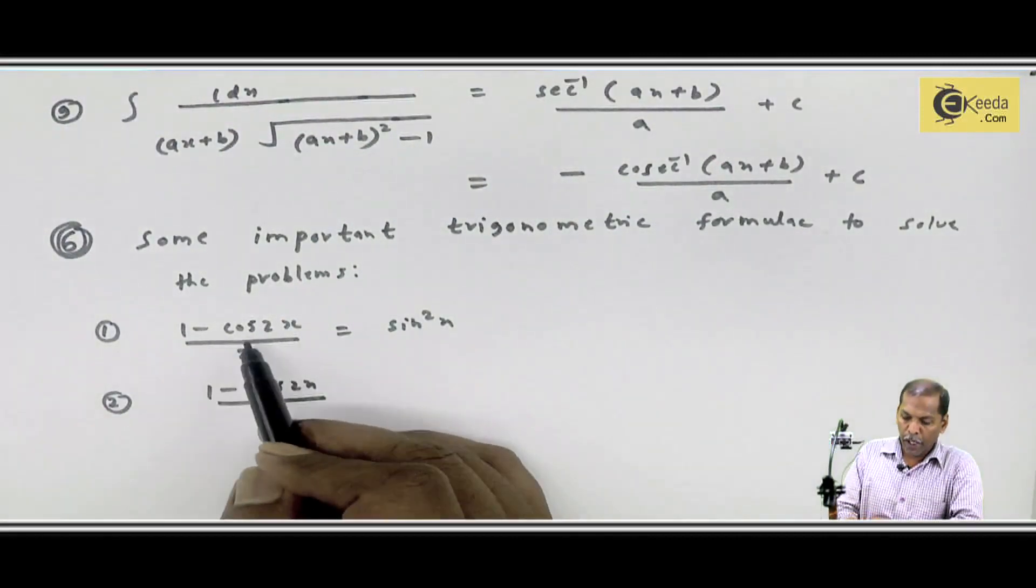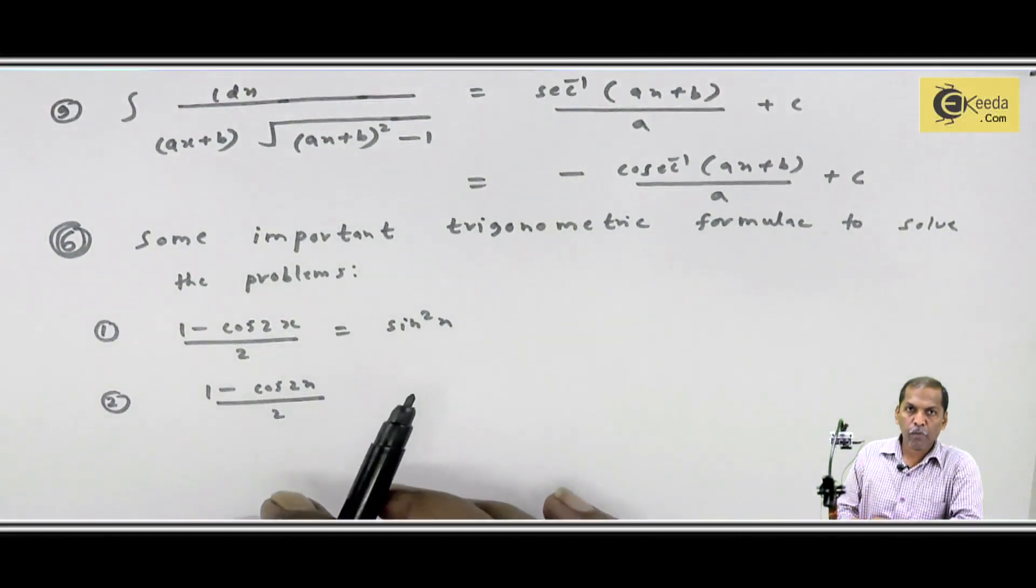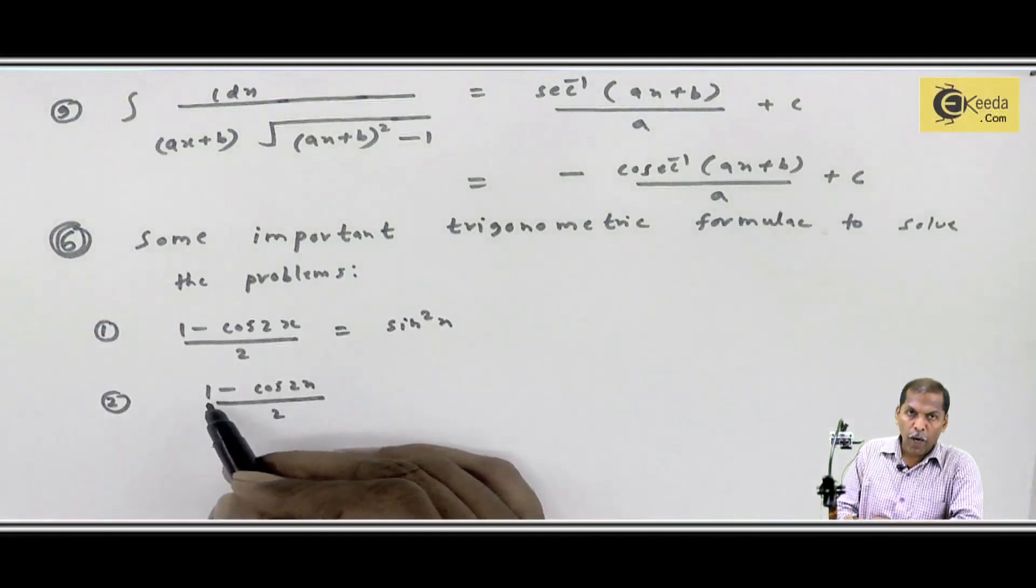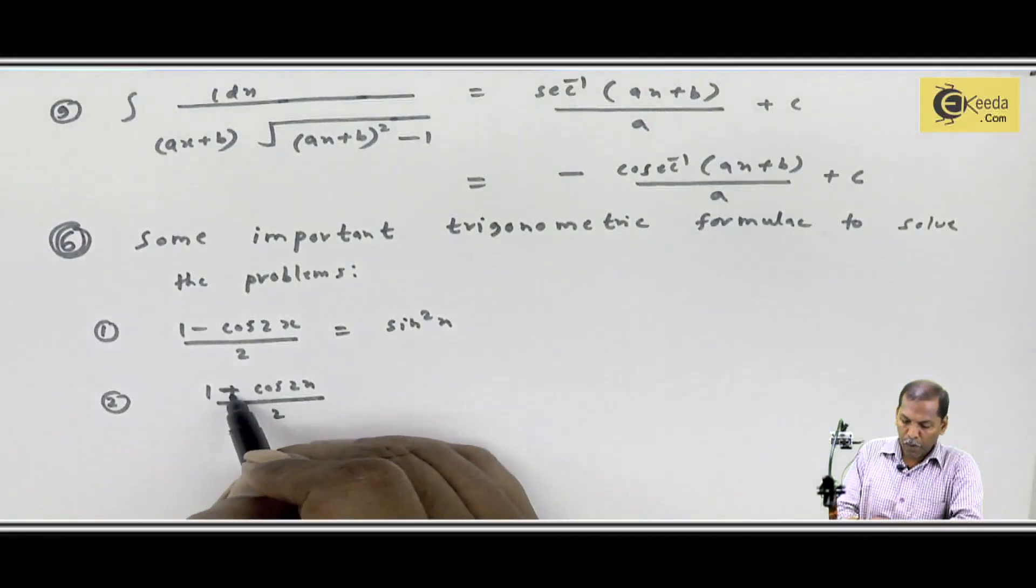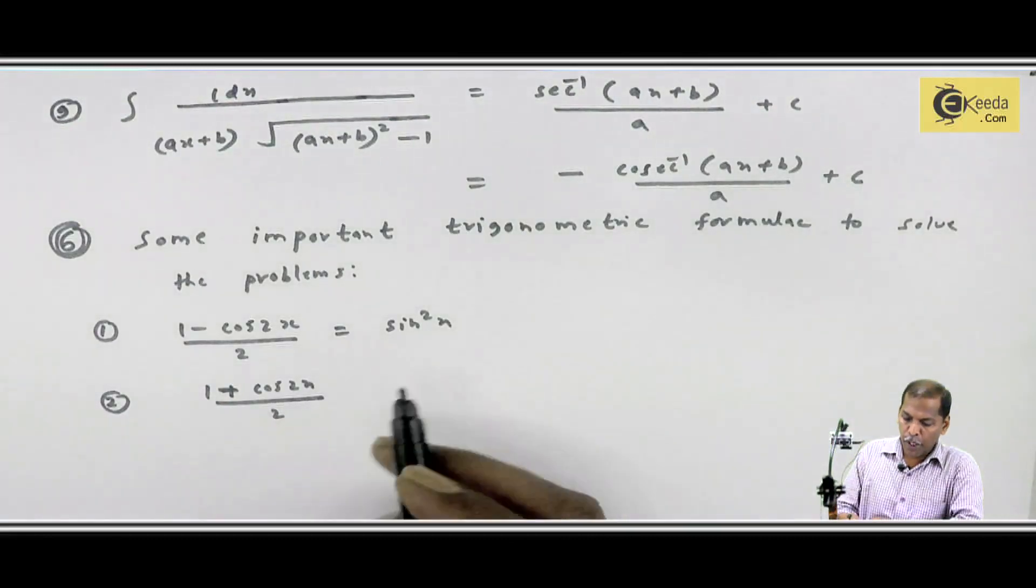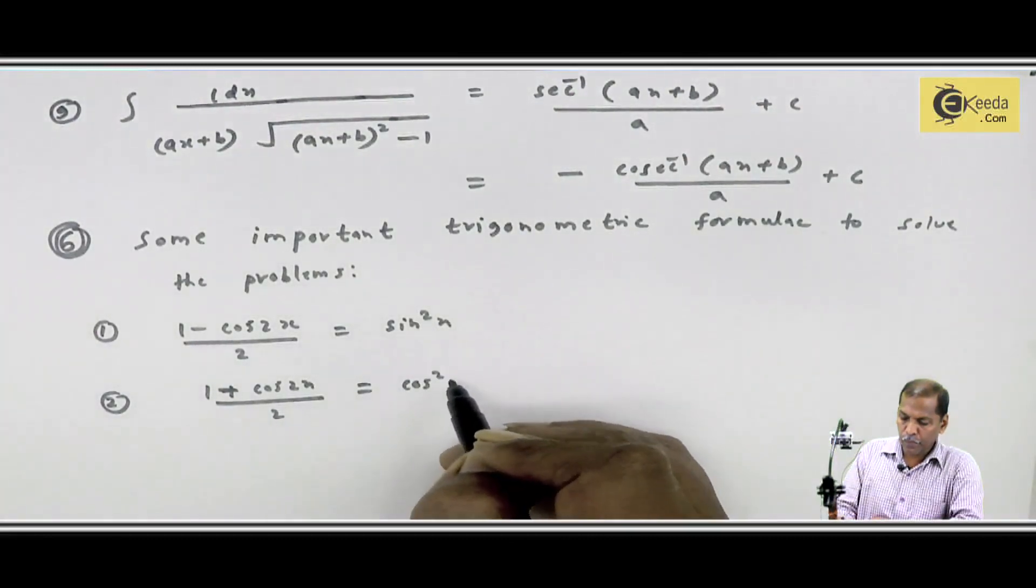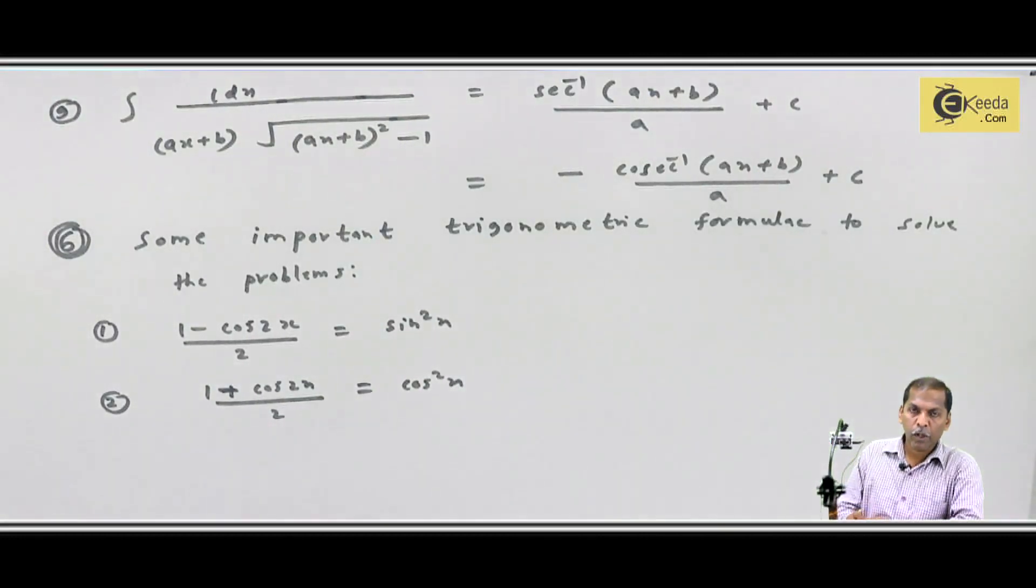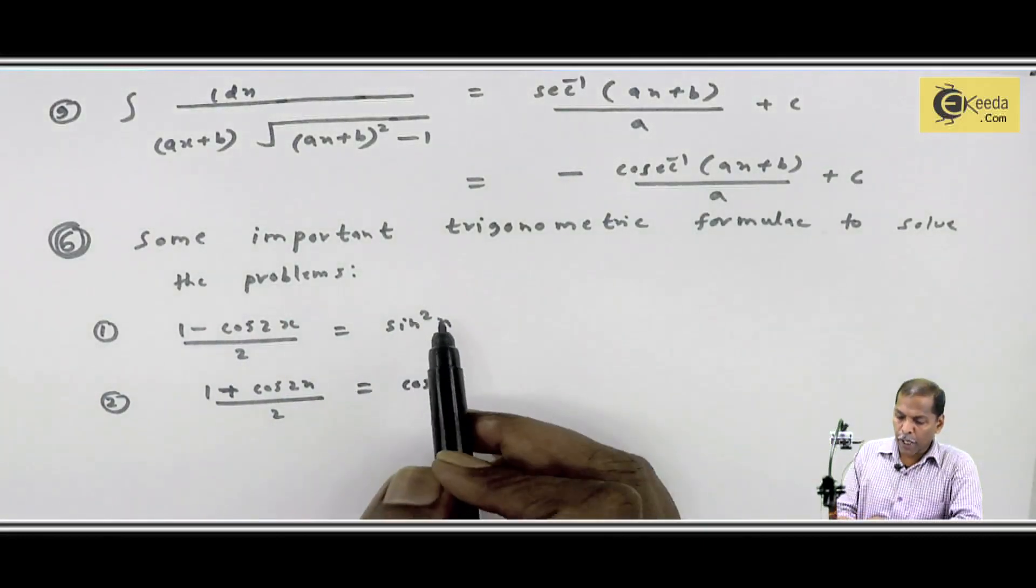Number 2: 1 plus cos2x upon 2, which we can write as cos²x.